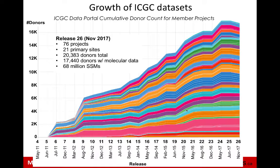Data has been growing over the ten-year period. We are now at 20,000 donors in total sent to the DCC. Some don't have molecular data yet, meaning the submitters have sent in clinical data first but sequencing variants haven't come in. We do have over 17,000 donors with molecular data, and we hope that with two more data releases we will hit the target of 25,000.